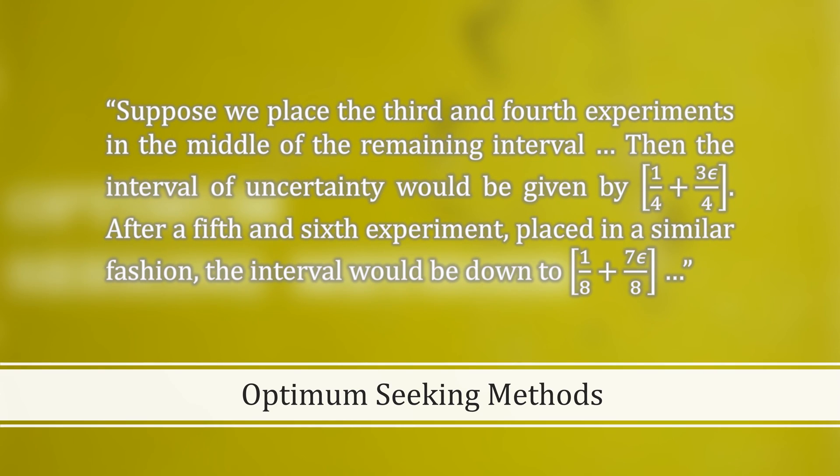Suppose we place the third and fourth experiments in the middle of the remaining interval. Then, the interval of uncertainty would be given by 1 quarter plus 3 epsilon over 4. After a fifth and sixth experiment placed in a similar fashion, the interval would be down to 1 eighth plus 7 epsilon over 8.